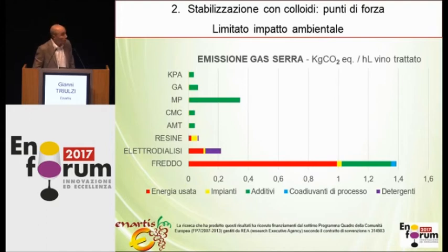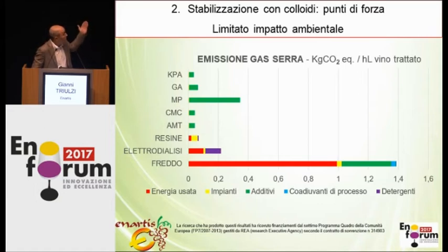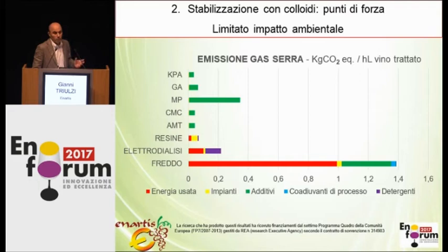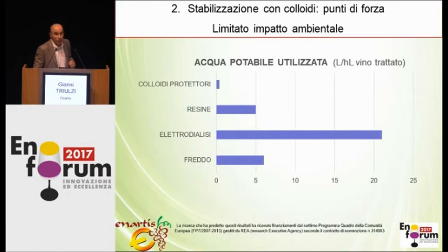Consider this graph. Here we compare and contrast the environmental impact of several stabilization techniques, calculated in terms of equivalent kilos of CO2 per treated hectolitre of wine. You see on the left-hand side potassium aspartate. The impact of stabilization with colloids is less than stabilization obtained with the cold treatment. These figures tell us that if wine stabilized with the cold approach in Europe were treated with colloids, we would avoid 70,000 tons of CO2 being put into the atmosphere every year.